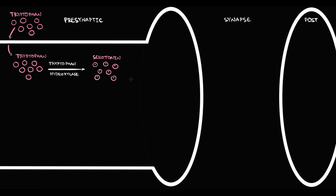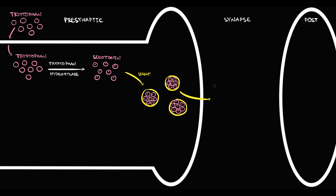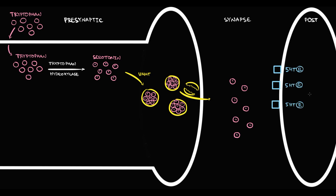Once serotonin is formed, vesicular monoamine transporter puts serotonin inside the vesicles, and in this form serotonin is stored inside the neuron. Once depolarization occurs, the neuron pushes vesicles into the synapse. We call this process exocytosis. As a result, vesicles become destroyed and serotonin molecules enter the synapse. On the postsynaptic neuron we have numerous serotonin receptors, and once serotonin molecules appear in the synapse, most of them immediately bind to these receptors.